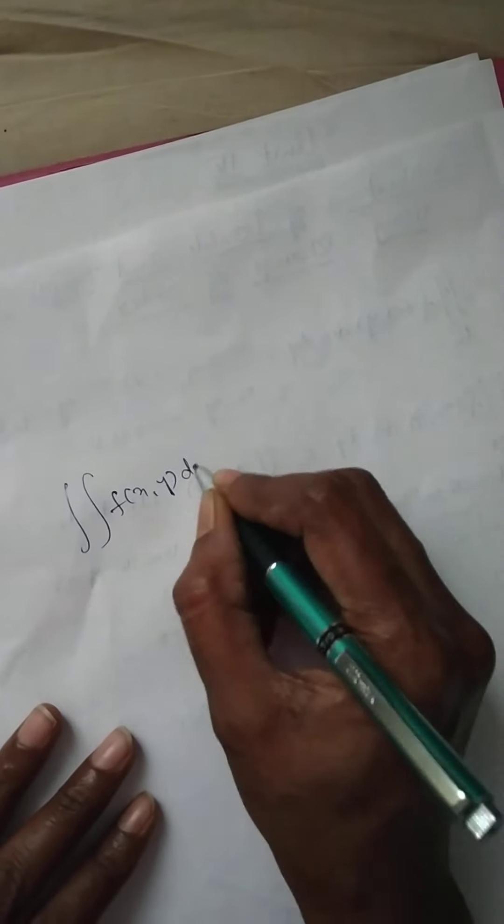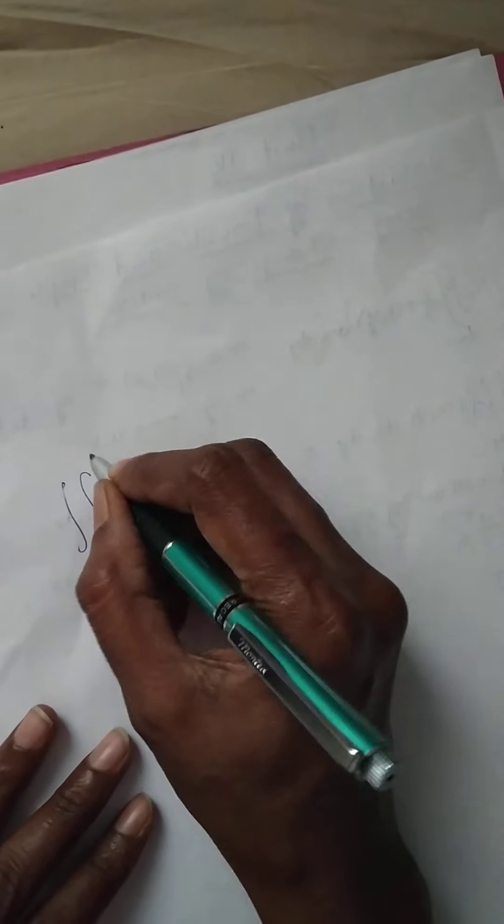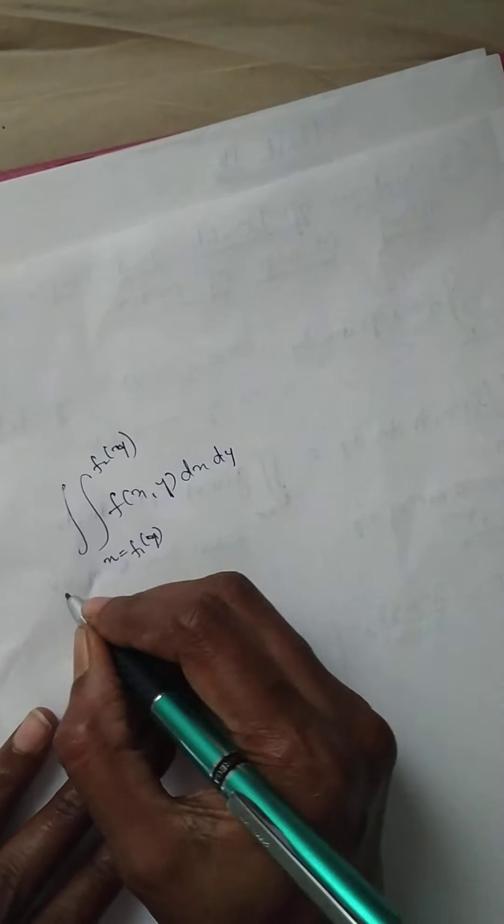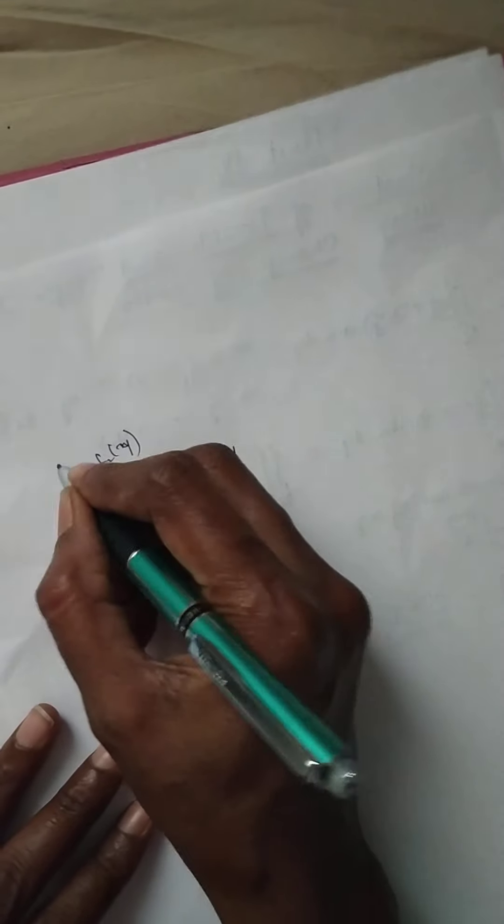So why do we deal with change of order? Sometimes it becomes very difficult to evaluate the integration as it is given, so we go for change of order. If we have given a double integration of a function of x and y, dx dy, where x has variable limits — x is a function of y — and y has constant limits.